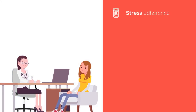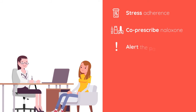The following are recommended action steps for providers. Stress to the patient that adhering to OUD treatment, including the use of medication, is the most effective protection against relapse and overdose. Co-prescribe naloxone, an opioid antagonist used to reverse opioid overdose. Alert the patient to the possibility of continued use and emphasize the importance of not using alone, not combining drugs, and keeping naloxone on hand.